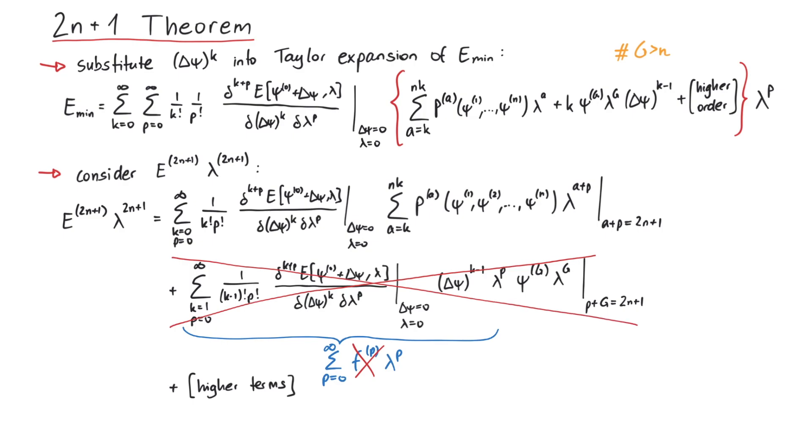And since we do not need the higher order terms of the third term, only the first term remains. By looking at the first term more closely, we see that only wavefunction corrections psi_1, 2, 3 up until n are present. No higher orders. With this, we have successfully proven the 2n+1 theorem.